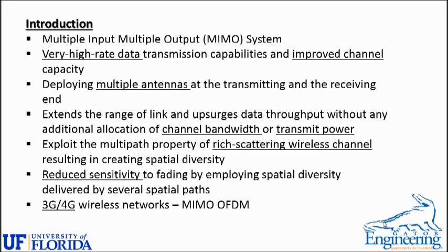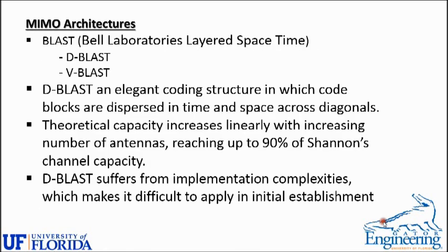In 3G or 4G wireless networks, MIMO is a key element. There are lots of MIMO architectures present in the literature. Among them, the BLAST architecture is very famous. BLAST stands for Bell Laboratories Layered Space-Time architecture. There are basically two types: D-BLAST, which is the diagonal BLAST, and V-BLAST, which is the vertical BLAST. D-BLAST is an elegant coding structure in which blocks are dispersed in time and space across diagonals. If we increase the number of antennas linearly, the throughput capacity can go up to 90% of channel capacity. However, D-BLAST suffers from implementation complexities, making it difficult to apply in initial establishment.